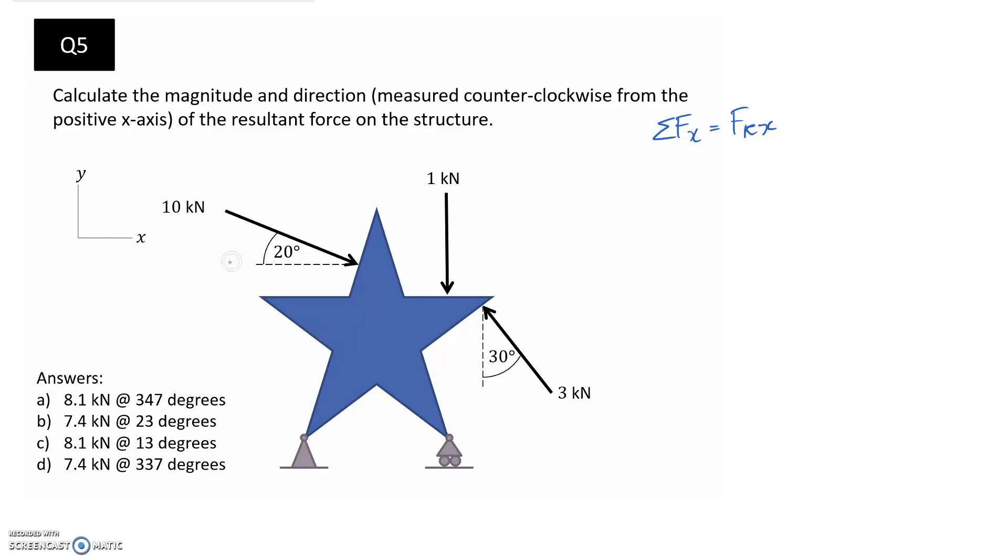So in the x-direction, we have a positive component here. It's going to be 10 cos 20 degrees. This one is only in the y-direction, so it's not going to contribute. And this one has a component that's in the negative x-direction, so it's going to be minus. And we need the sine side of the triangle this time, since it's the opposite. So 3 sine 30.